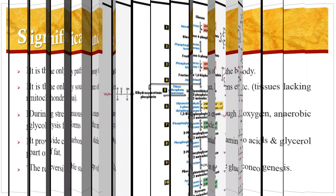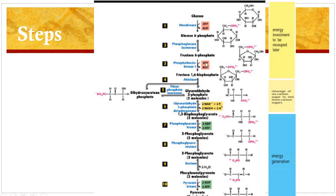Now coming to the steps in glycolysis. These are the different steps involved in the glycolysis pathway, which is divided into 3 parts. The first is the energy investment phase, the second is the splitting phase, and the third is the energy generation phase. The pathway involves 10 steps from 1 to 10, and these are the structures of different molecules produced at each step.